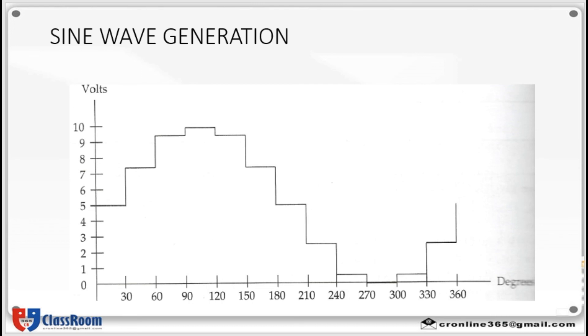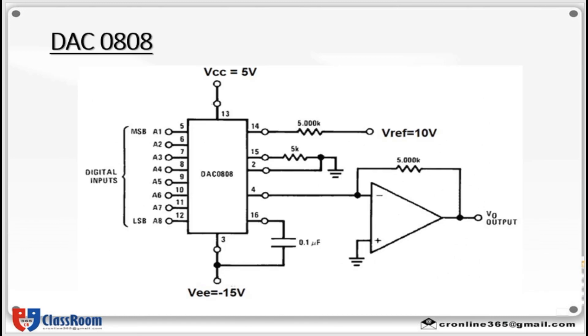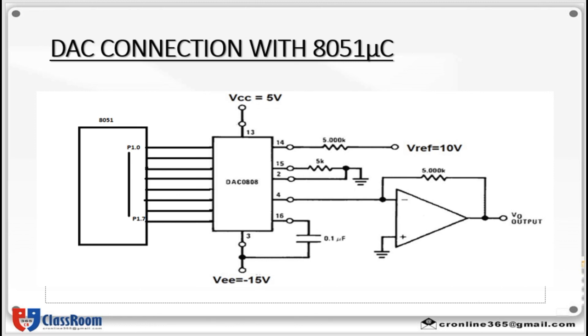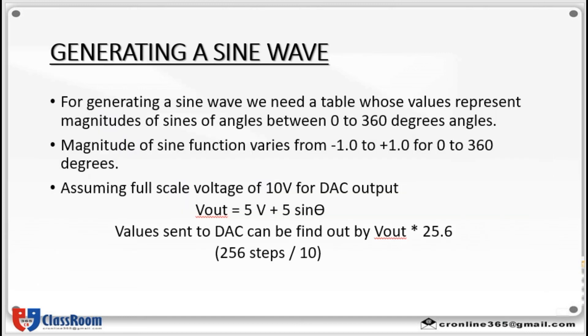So in this video I have explained about DAC interfacing with 8051 microcontroller. First we have seen what a digital to analog converter means. Then we have gone through the DAC diagram. Then we have described how analog output is arrived by using this equation. Then we have explained about the connection of DAC with the 8051 microcontroller and then we have explained about a method to generate a sine wave by means of DAC. Hope you have understood this video. Thank you.